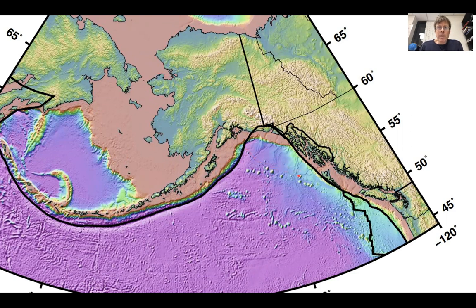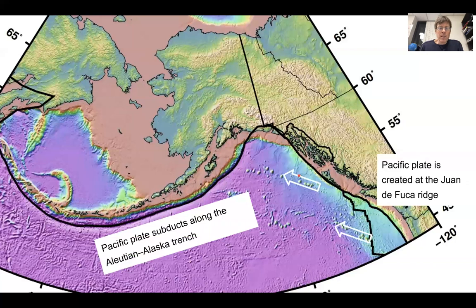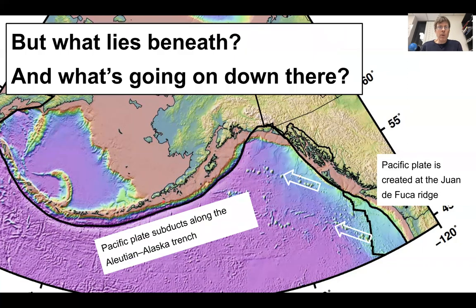So with all that complexity on the surface, here we have the Pacific plate created at the Juan de Fuca Ridge. We can see these hotspot tracks of volcanoes, and the subduction then along the Aleutian-Alaska trench. But the real question is what lies beneath? What's going on down there? What's causing all of this?